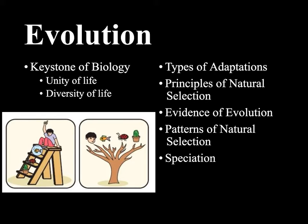We're going to look at five different videos in this unit. First, we'll look at types of adaptations, then we'll go into principles of natural selection — how evolution by natural selection occurs. Then we'll look at evidence of evolution, then patterns of natural selection, and finally speciation, which is really where we get to the diversity of life.